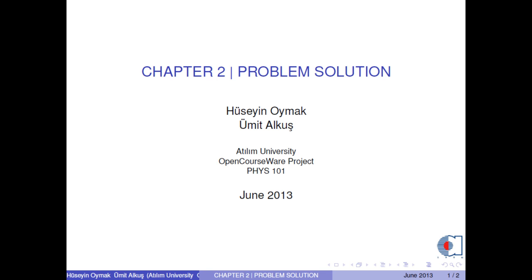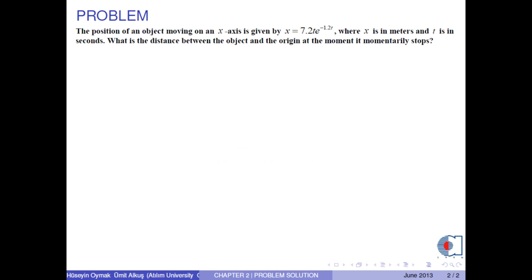Hello there, I am Imitalkush. In this video, we will solve one problem in Chapter 2. The position of an object moving on an x-axis is given by x equals 7.2 times t times e to the power negative 1.2 t, where x is in meters and t is in seconds. What is the distance between the object and the origin at the moment it momentarily stops?